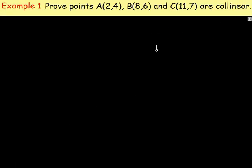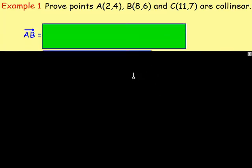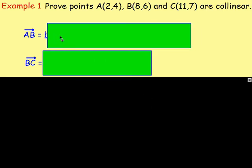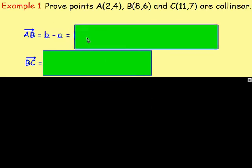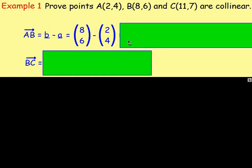Example 1: Prove that the points A(2,4), B(8,6) and C(11,7) are collinear. We need to think about the vectors AB and BC. Vector AB is going to be B minus A, which is (8,6) take away (2,4). If you work that out, you get (6,2).